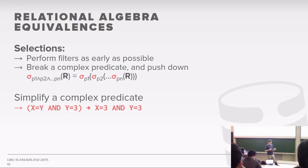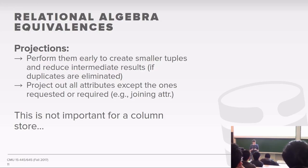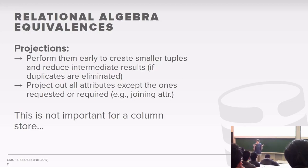For projections, we want to produce smaller tuples as soon as possible in our query plan so we're passing less data from one operator to the next. In the volcano or iterator model, you're copying tuples as the output of an operator and passing them to the next one. If you're passing along columns that aren't even needed in your query, you're wasting time copying things you don't actually need. This is not a big deal in a column store — the database can be smart about only grabbing the columns it actually needs — but in a row store, your entire row gets copied up.